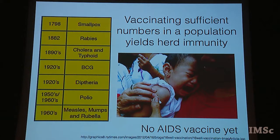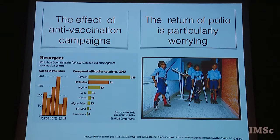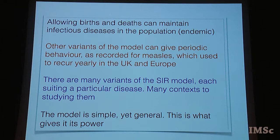Here are the vaccinations that were developed at various times starting from 1798 to the 1960s. Note that we still have no vaccine against AIDS, because finding vaccines that are stable and do what you want them to do is a very difficult task. There have been a lot of anti-vaccination campaigns. In particular, polio has been rising in Pakistan, along with violence against vaccination teams. Polio — a disease that had almost been completely eradicated — potentially resurging is a very worrying trend that should concern everyone who thinks about public health.